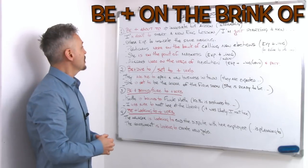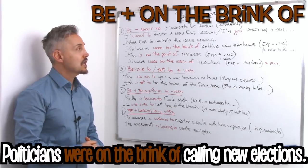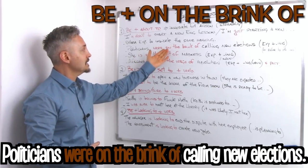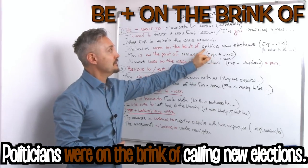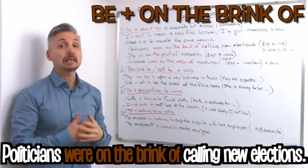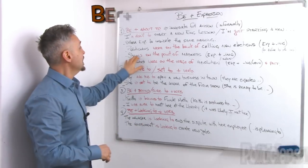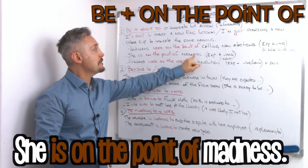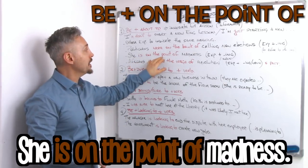For example, politicians were on the brink of calling new elections. So here we have the expression to be plus on the brink of plus ing, a verb with an ing to refer to something important. So another expression could be she's on the point of madness.